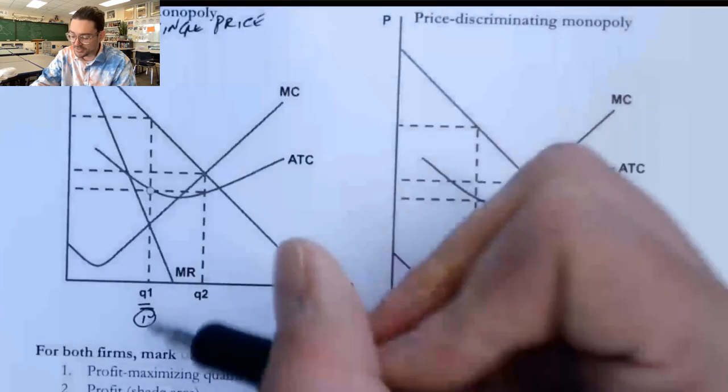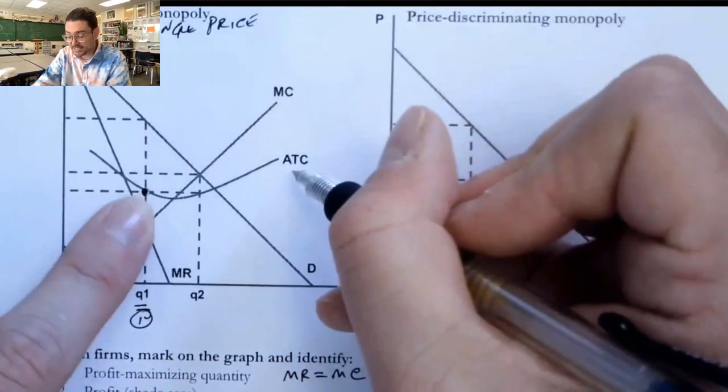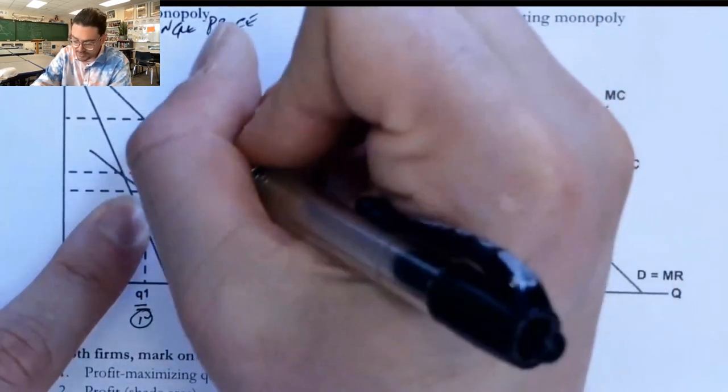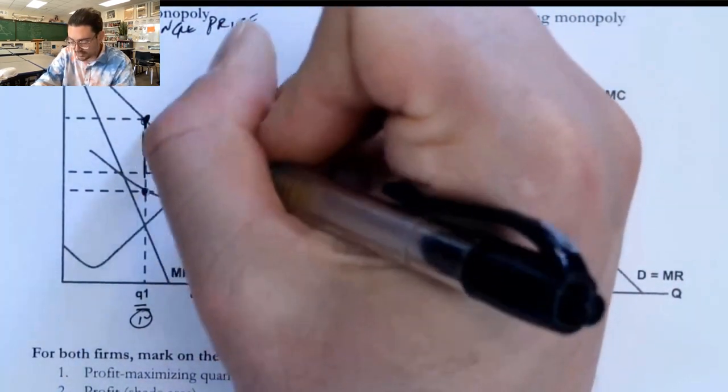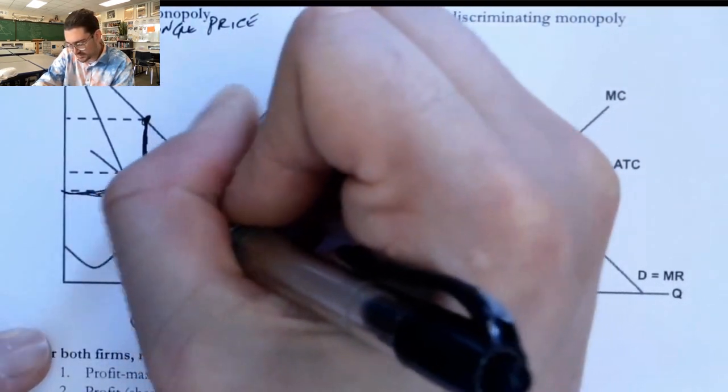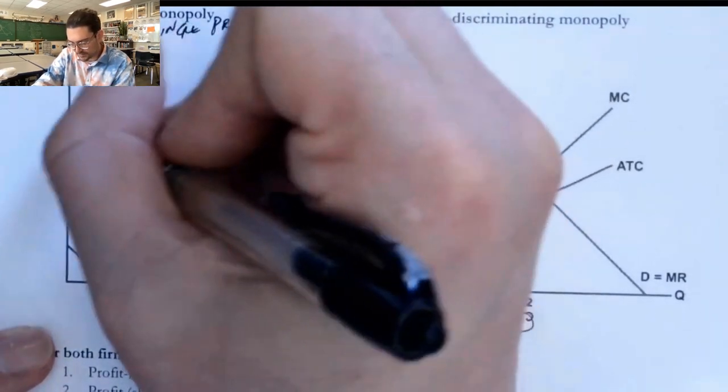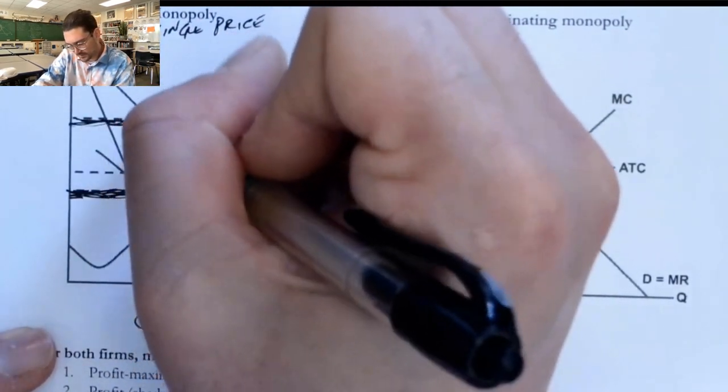Profit, shade the area. If they're producing at Q1, then we know that the distance from the ATC at that quantity all the way up to the price on the demand curve is actually our profit. So I'm going to connect those, shade them together, link them together. And we would say this area here is profit.